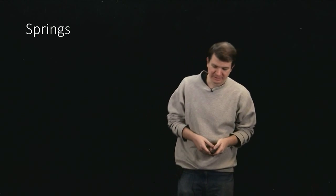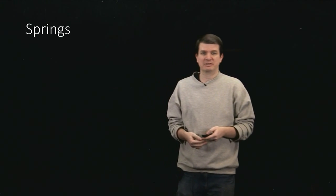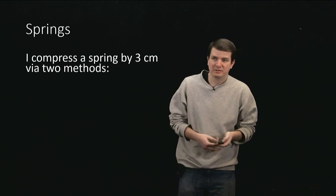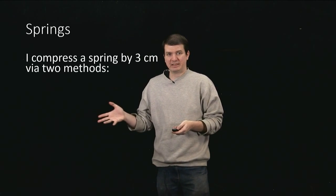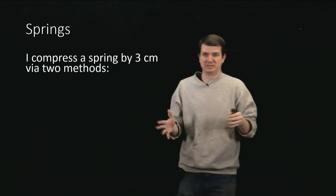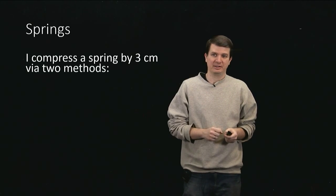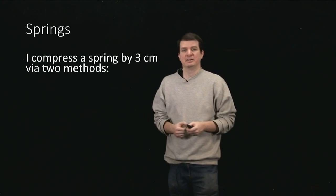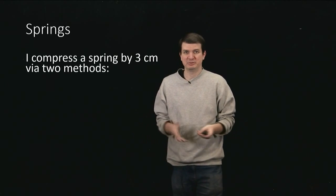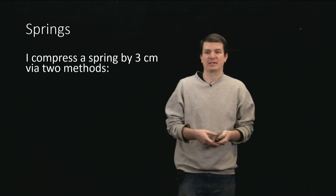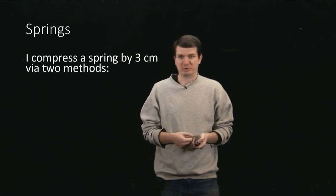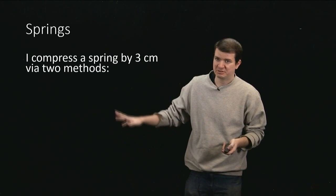So let's take a look at an example of such a case and see if it is conservative. We'll use this criteria of being path independent to check. So let's suppose that my end state is that I've got a spring and I want to compress it by three centimeters. And I'm starting from a state where the length of the spring is just its normal equilibrium length. But the way in which I'm going to compress by three centimeters is I'm going to do two different methods.